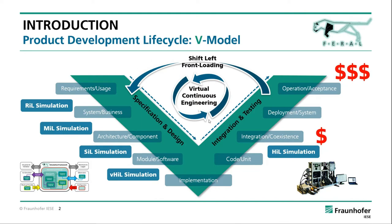We have to go one step further to make sure that new concepts, features, and innovations are feasible with the current setup. That's why we added additional stages — we call them requirements-loop simulations — basically at the early stages of the development process when you define your requirements and the drivers for architectural decisions. You have to validate already if this is feasible, and you need infrastructure for that.